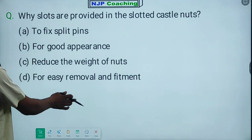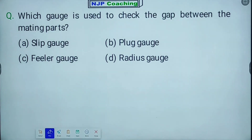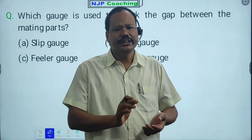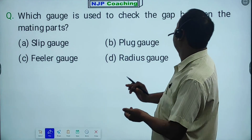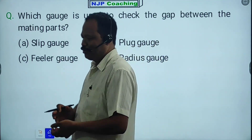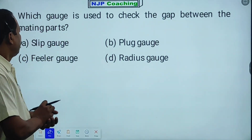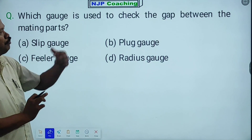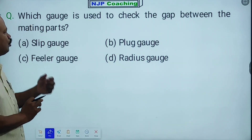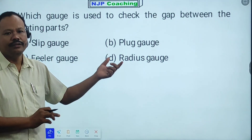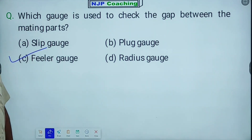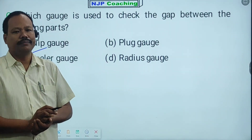Next question: which gauge is used to set the gap between the mating parts? The answer is feeler gauge. Feeler gauge is used to measure the gap between mating parts.